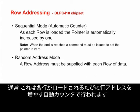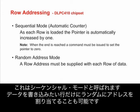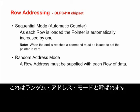Typically, this is done with an automatic counter that increases the row address with each row loaded. This is called sequential mode. It is also possible to randomly address only those rows that you wish to write data to. This is called random address mode.